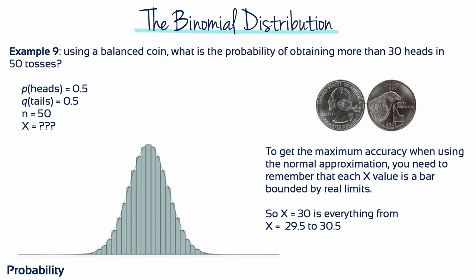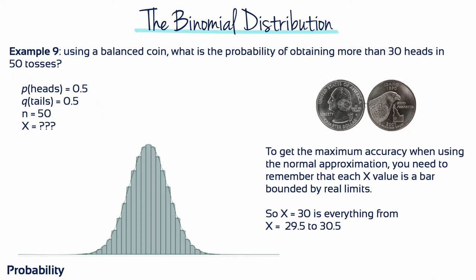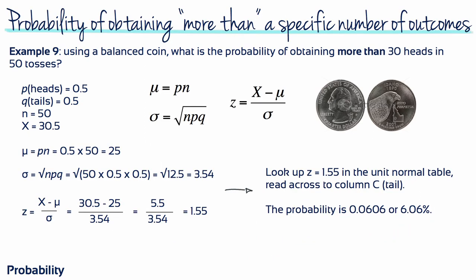Example 9: Using a balanced coin, what's the probability of obtaining more than 30 heads in 50 coin tosses? The probability of getting a head is 0.5, and the probability of getting a tail is also 0.5. N equals 50. To get maximum accuracy when using the normal approximation, remember that each X value is a bar bounded by real limits. So X equals 30 is everything from 29.5 to 30.5. The problem asks about more than 30 heads, so we use the upper real limit of 30, which is 30.5.